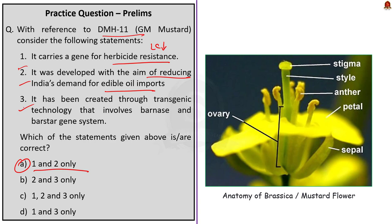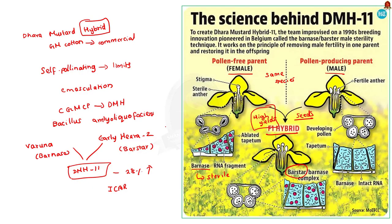Statement 3 is wrong because GM mustard is not a product of transgenic technology — it is a result of hybridization. While a transgenic plant contains DNA from another organism via gene splicing, a hybrid plant contains DNA only from both parents via fertilization. There is a UPSC previous year question regarding this topic from 2018.